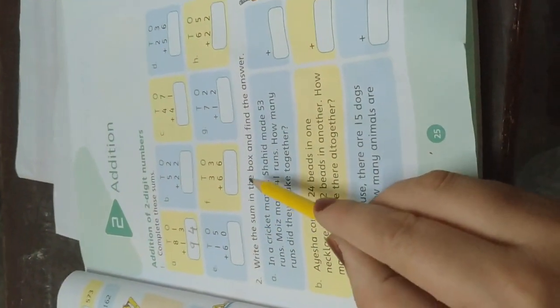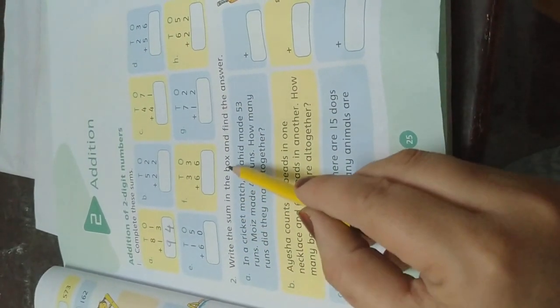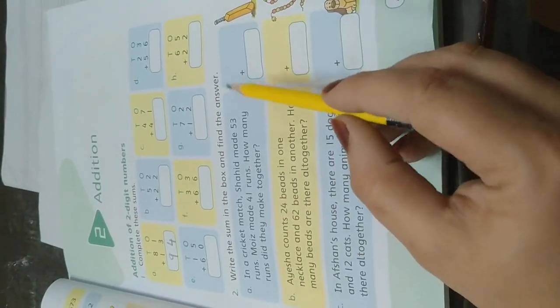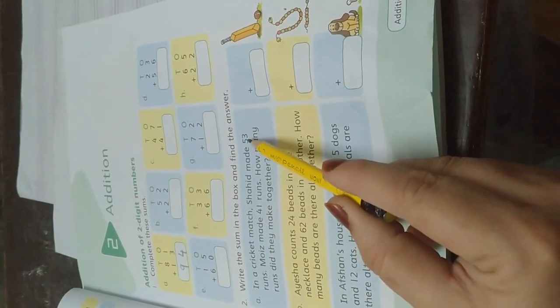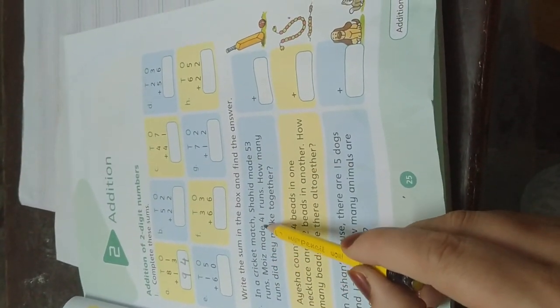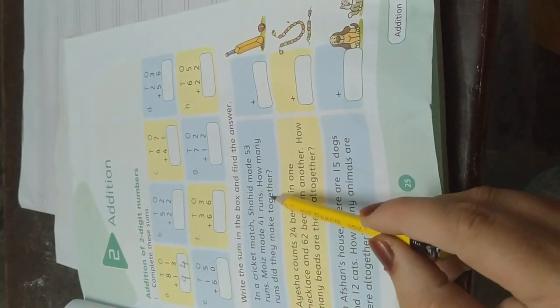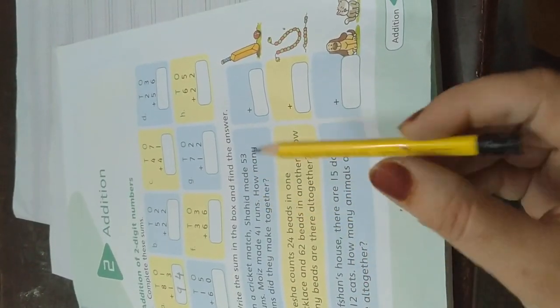Now question number two: write the sum in the box and find the answer. This is the box and now we will find the answer here. Option A: In a cricket match, Shahid made 53 runs, Moise made 41 runs. How many runs did they make together? So we will find out the figure.